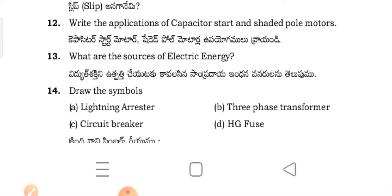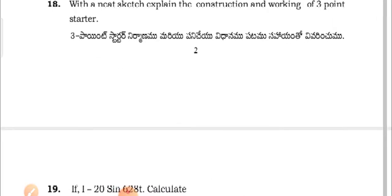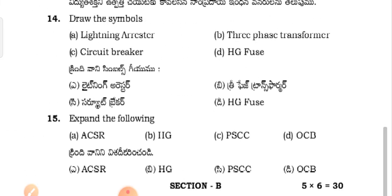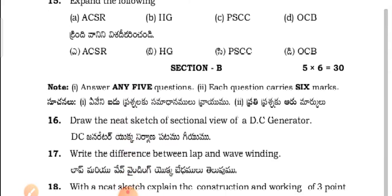What is slip? Read the applications of capacitor start and shaded pole motors. What are the sources of electric energy? Draw the symbols of the lightning arrestor, circuit breaker, three-phase transformer, and HRC fuse. Expand the following abbreviations: ACSR, 11G, PCCC, OCB.